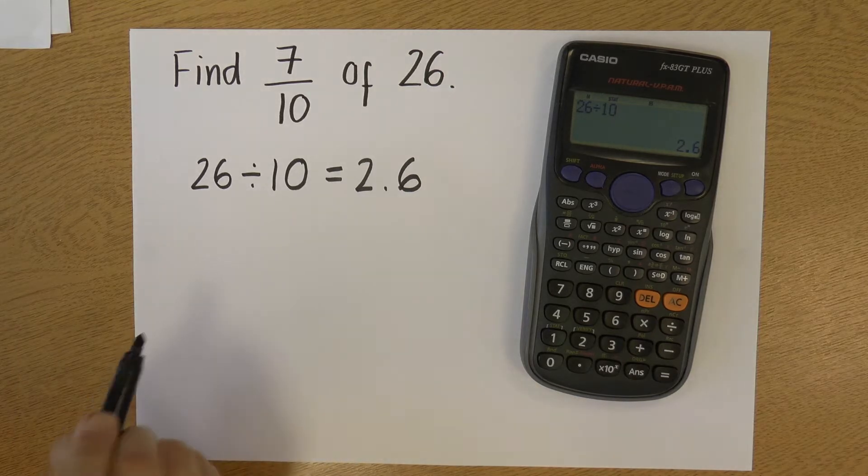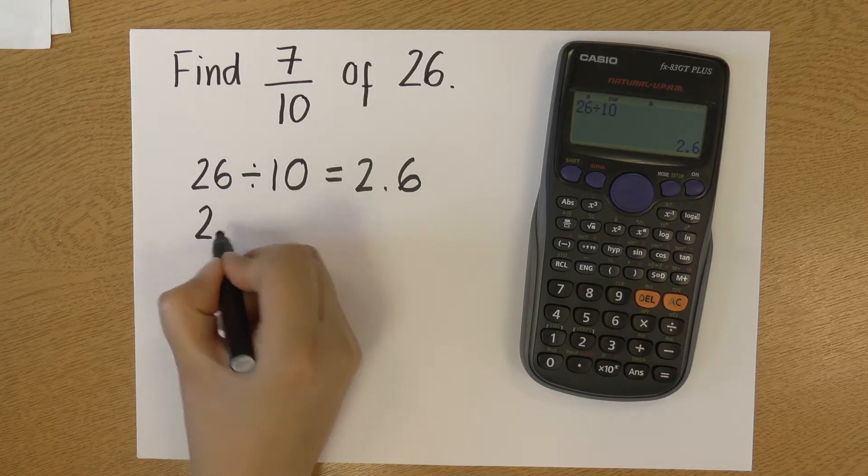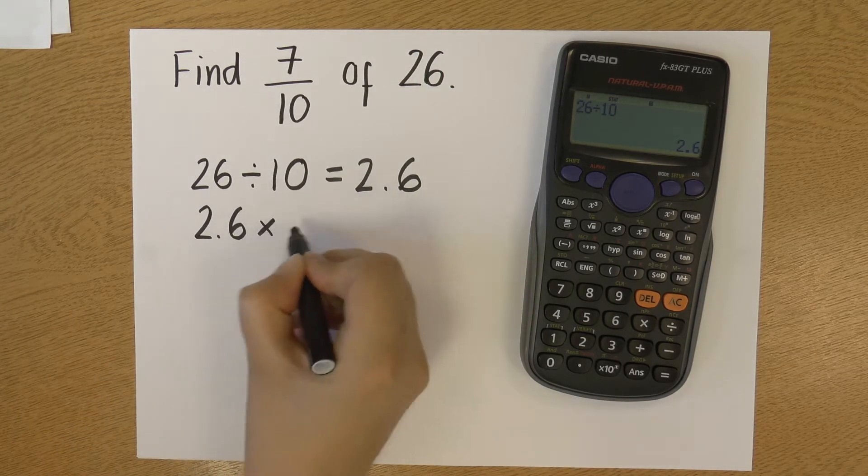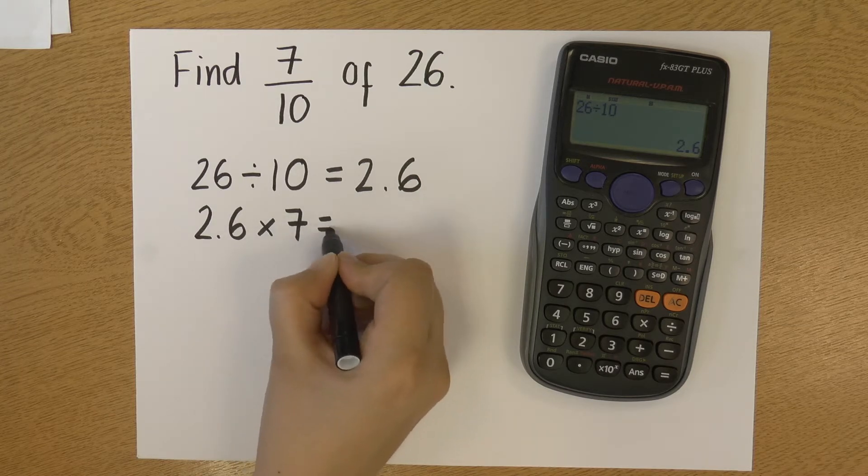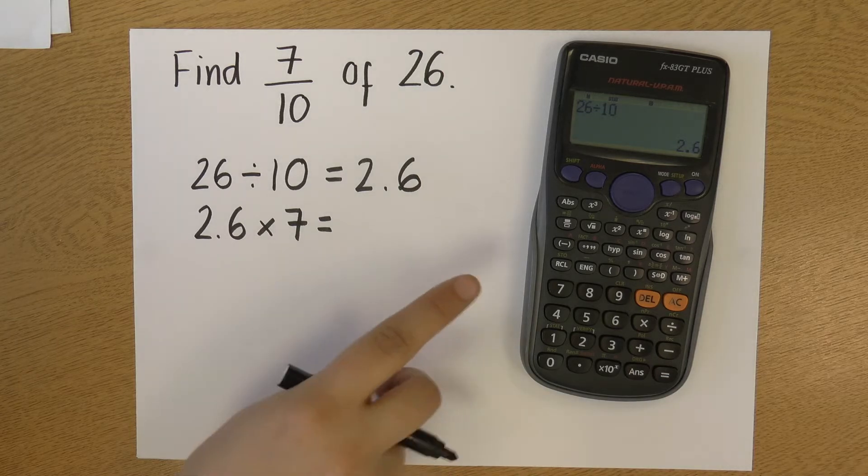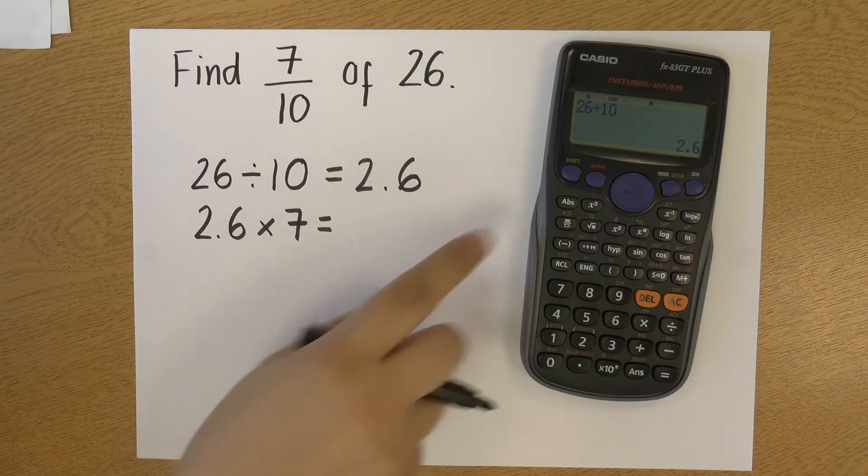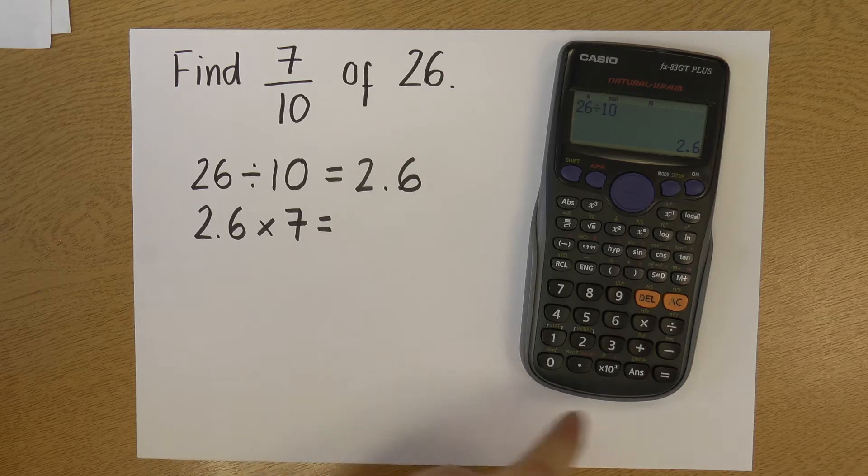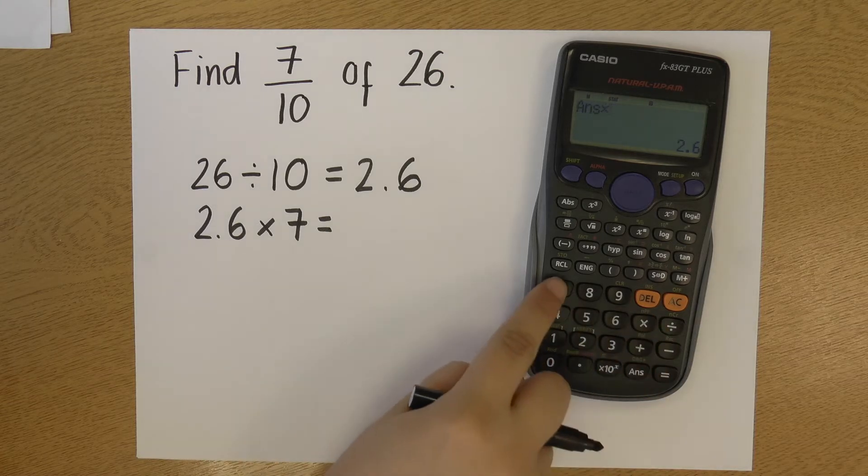So the next thing I'm wanting to do is 2.6 times 7. So I could write 2.6 times 7 in the calculator, but if I leave my answer of 2.6 on the screen, what I can just do is times 7.